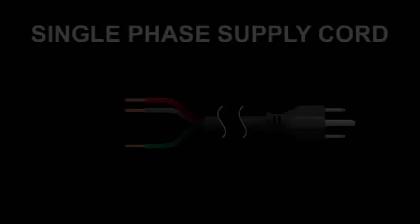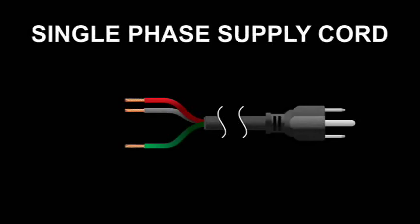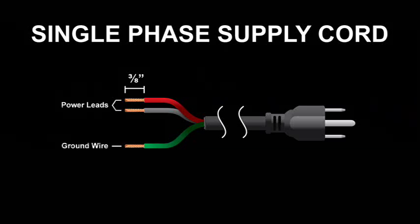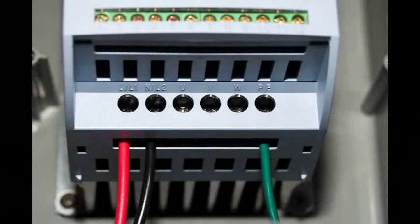Once you have the drive mounted, it's time to connect the single-phase supply. Strip off approximately 3/8 of an inch of insulation on each of the wires from your supply cord. There should be three wires here: two power wires and a green or bare copper wire for ground. Connect the two power leads to the terminals marked L L1 and N L2.